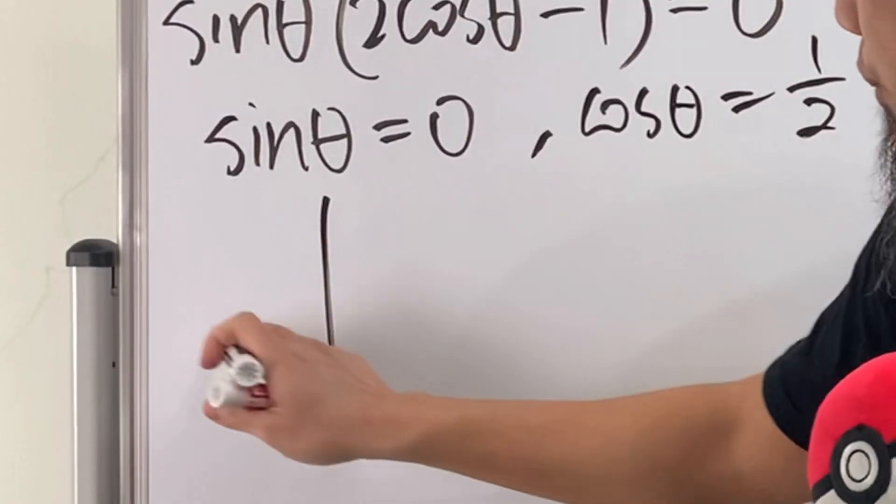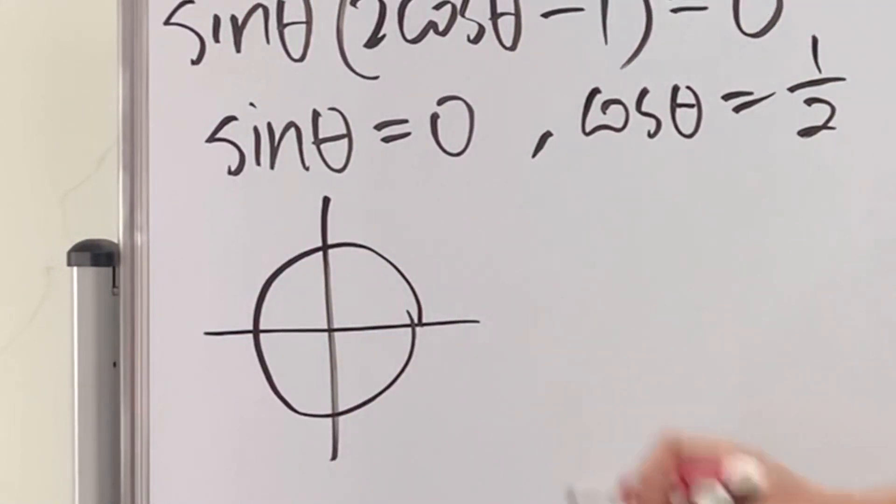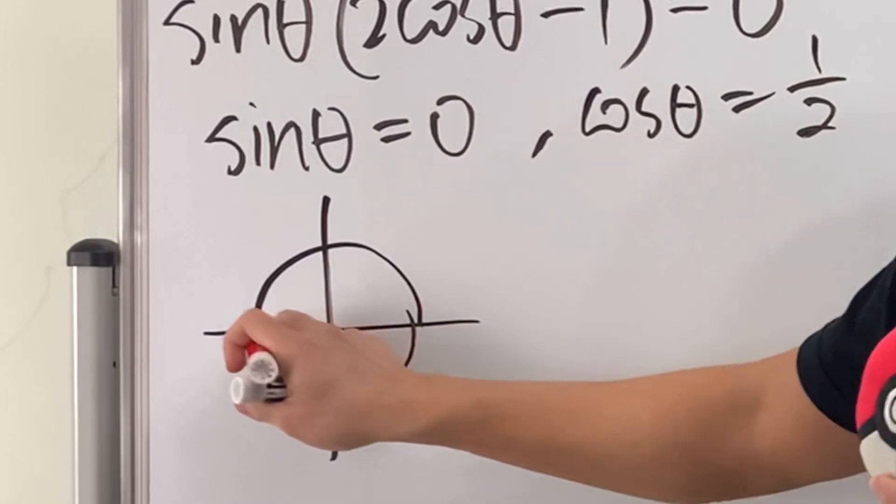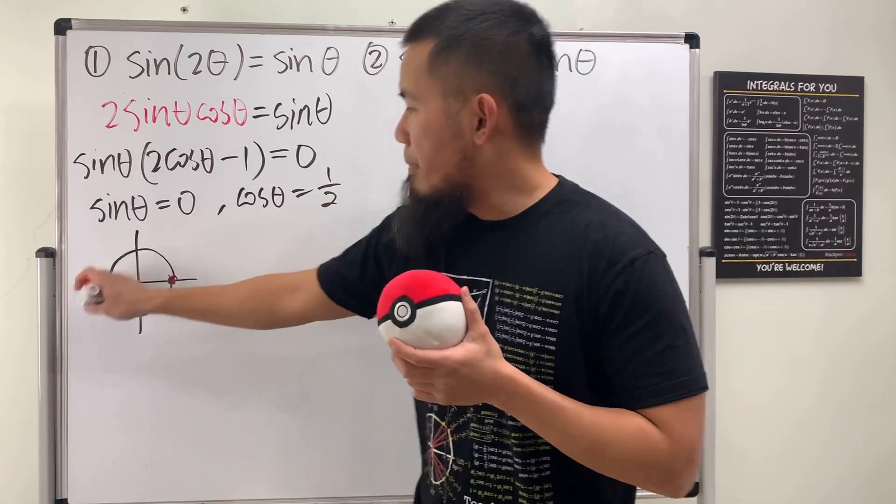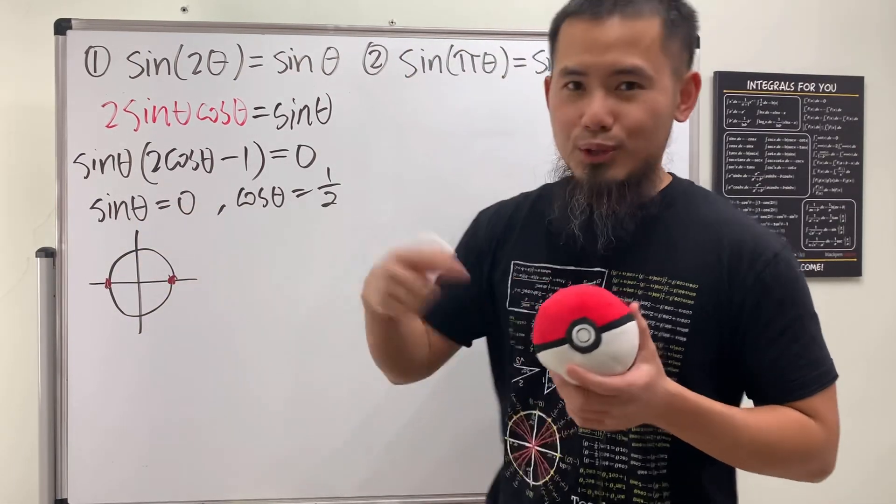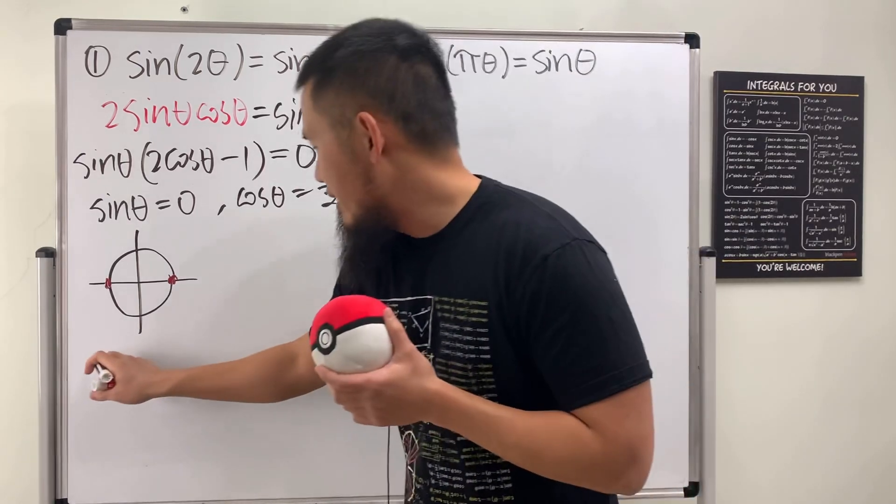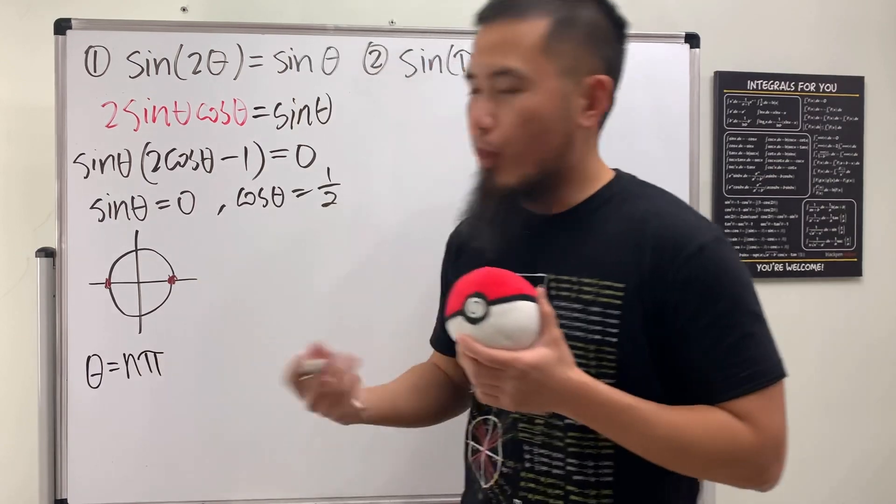For the first one, I will refer to the unit circle. Well, sine is the y value on the unit circle. We want sine to be 0. That means we have to be right here and right here. Namely, the angle has to be 0, pi, 2 pi, 3 pi, and so on, so on, so on. And it can also go backwards. So here we can say theta is just equal to n pi, where n is just an integer.